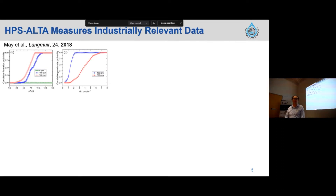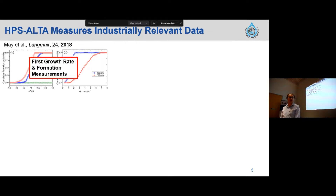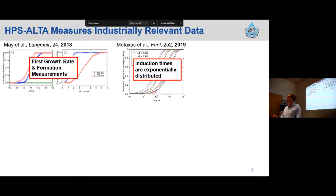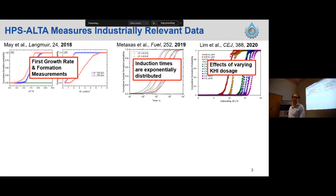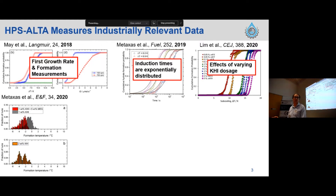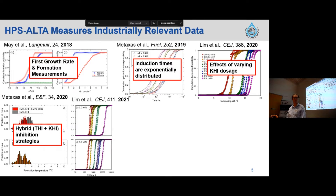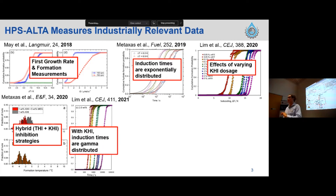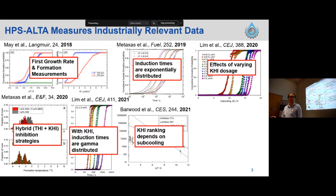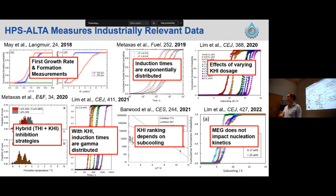As a summary of where we're at: the HPS Ultra journey started in 2018, with the first formation and growth rate measurements of methane hydrate. We've then shown induction times are exponentially distributed for a system not containing KHI. We've looked at effects of varying KHI dosages, combined KHI inhibition strategies, and shown that with KHI in your system, induction time is no longer exponentially distributed — it's now gamma distributed. The KHI ranking for your system can depend on the subcooling and which metric you use to evaluate it. More recently, we've shown that MEG doesn't impact nucleation kinetics, only the formation temperature.